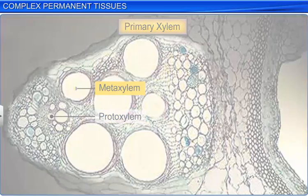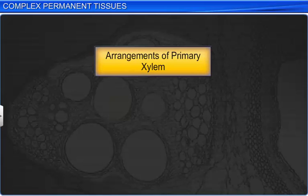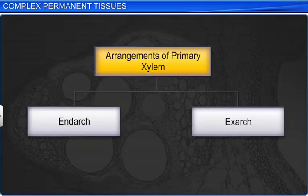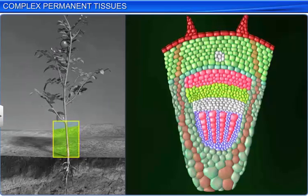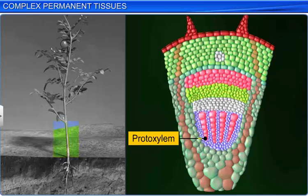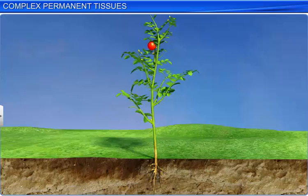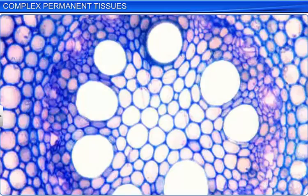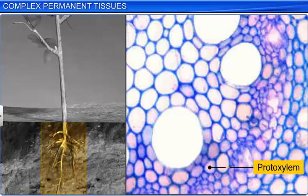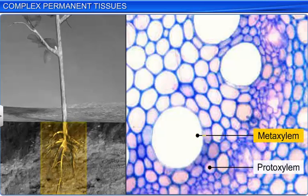The arrangements of primary xylem are endarch and exarch. In the stem, the proto xylem lies towards the center or pith and the meta xylem lies towards the periphery; this arrangement is called endarch. In roots, the proto xylem lies towards the periphery and the meta xylem lies towards the center; this arrangement is known as exarch.